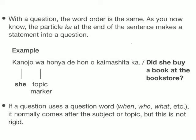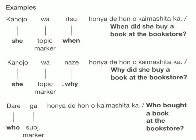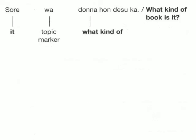If a question uses a question word — for example, when, who, or what — it normally comes after the subject or topic, though this is not rigid. For example: Kanojo wa itzu hon'ya de hon wo kaimashita ka? — When did she buy a book at the bookstore? Kanojo wa naze hon'ya de hon wo kaimashita ka? — Why did she buy a book at the bookstore? Dare ga hon'ya de hon wo kaimashita ka? — Who bought a book at the bookstore? Sore wa donna hon desu ka? — What kind of book is it?